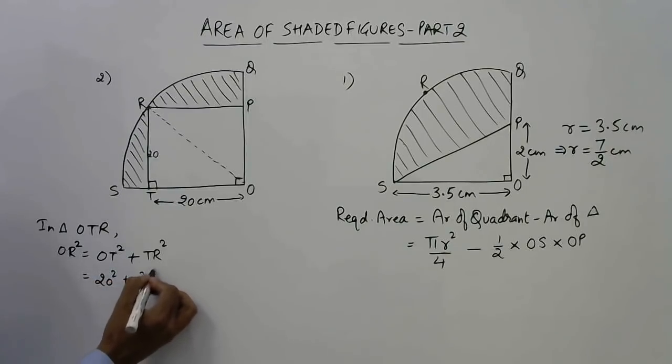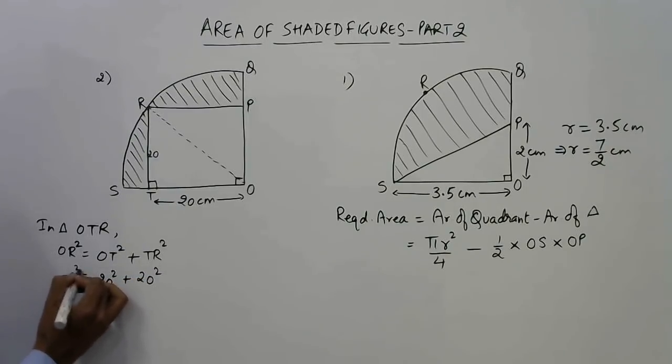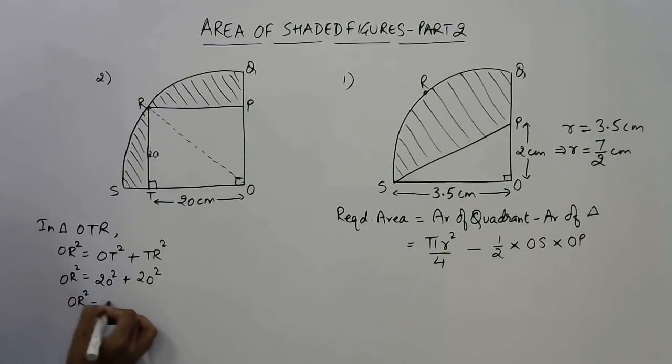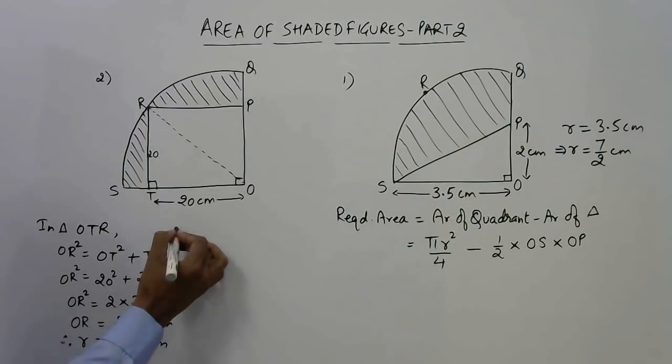You can substitute the values here to get the value of OR. That is 20² plus 20², so OR² equals this. This is twice 20², and if you remove this square sign, the entire thing will be in square root. So square root of 20² is 20, and 2 will come in the square root sign. Here we have the radius. Therefore, the radius of the quadrant is 20√2 centimeters.